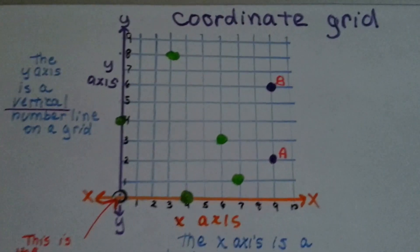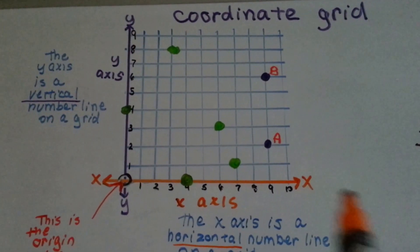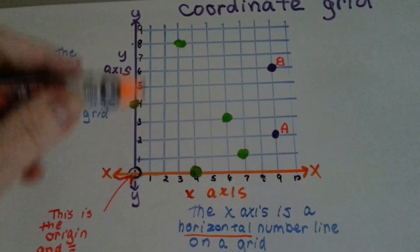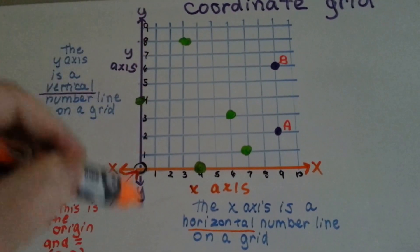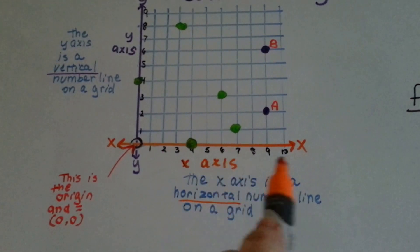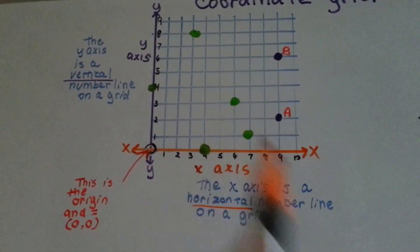This is a coordinate grid. It's got two number lines, one that's going sideways called the x-axis, and another one that's going up and down vertically called the y-axis. You can see the numbers on the number line, and you can put points on it.